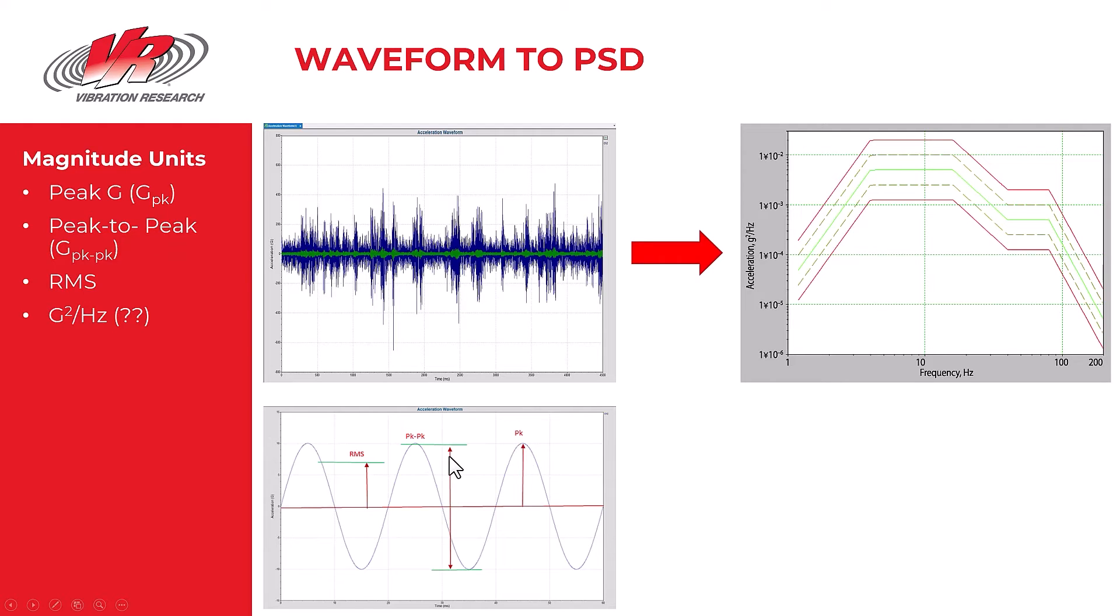And in a pure sine tone we can also measure the RMS or the GRMS value. It is simply the peak value measured from the zero position divided by the square root of 2, or in other words, 0.707 times this peak value.